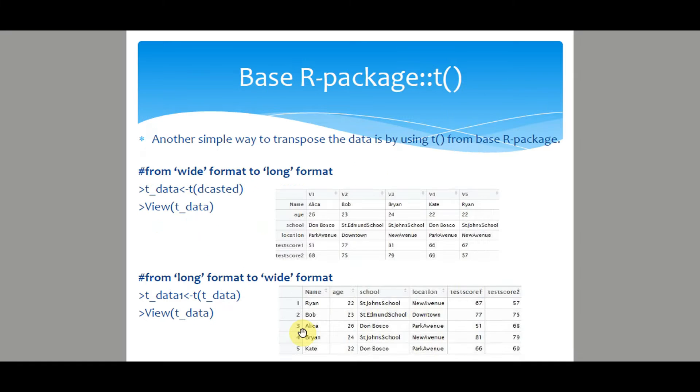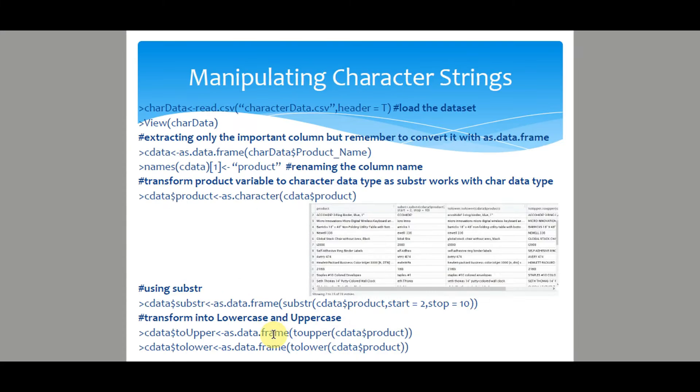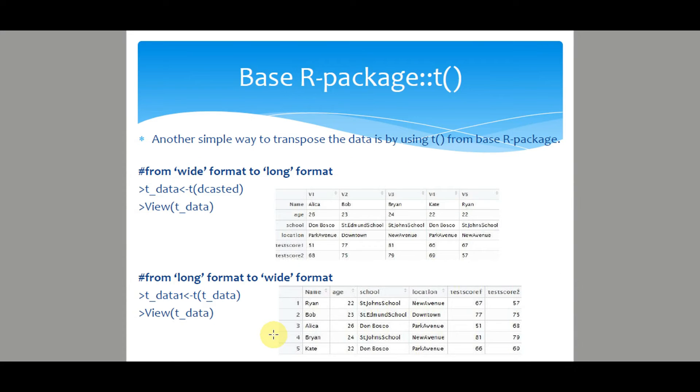With the base R package, there is also another simple way to transpose the data by using T function. Just mention the R object containing the data with T function, then it will automatically convert it to long format or from long to wide format. The only difference is the reshape function provides more options to format the data into wide or long format.